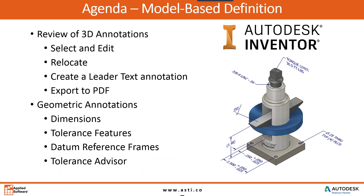Today we're going to start our presentation by having Jason give you a review of 3D annotations — how to select and edit, as well as relocate them. He'll follow that by showing how to create a simple leader text annotation, and finally an output example utilizing Inventor's 3D printing engine. Then he'll pass it over to me, and I'll show you how to create geometric annotations on part models using dimensions, general tolerance features, datum reference frames, and 3D annotations on assembly models.